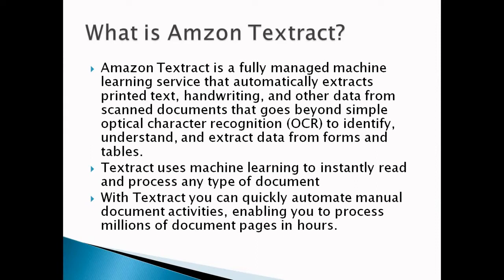So, what is Amazon Textract? It is a fully managed machine learning service that automatically extracts printed text, handwriting, and other data from scanned documents. It goes beyond simple optical character recognition — OCR — to identify and extract data from forms and tables. It captures both structured and non-structured data. Many companies today use data in the form of PDFs, documents, tables, and forms.